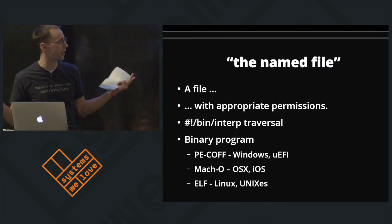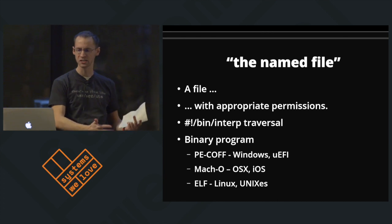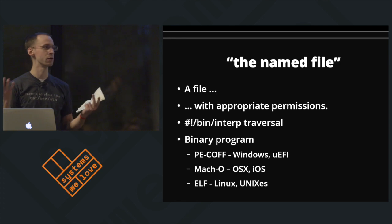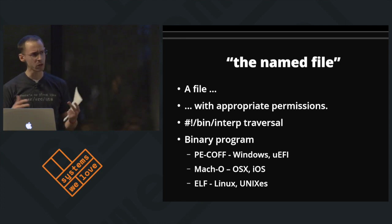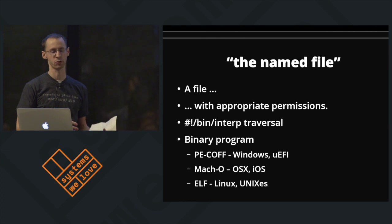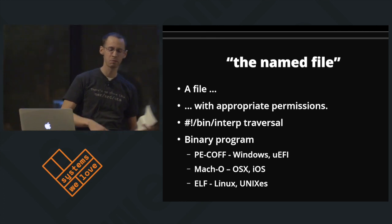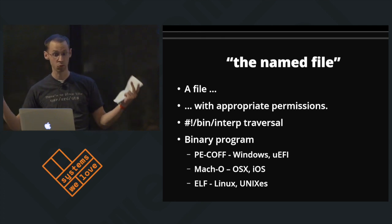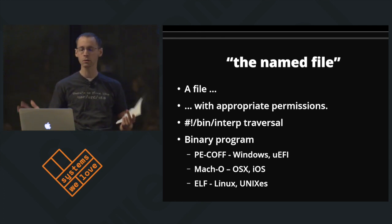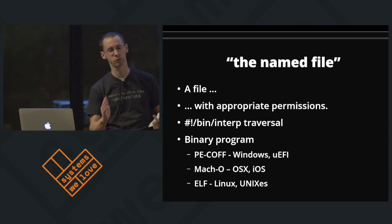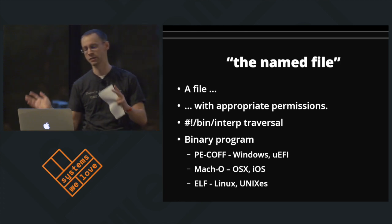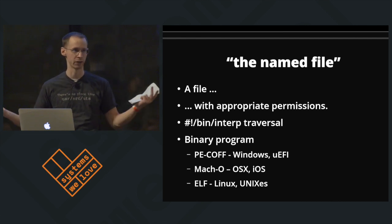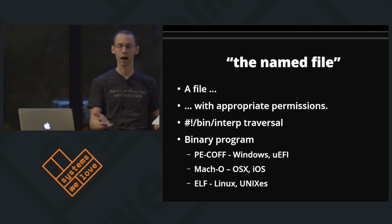When we talk about the named file, obviously it's a file - it's got to exist, it's got to have the appropriate permissions, the user has to be able to execute it. But when we look further into it, maybe this thing is a shell script with a shebang. Maybe it's a bash script, maybe it's a Python program, maybe it's a bash script that interprets a Python program. But once you walk through this chain of interpreters, eventually we expect to find ourselves presented with a binary - something we can actually run on the microprocessor.